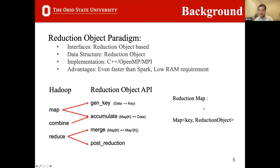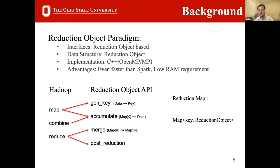To improve efficiency of local processing on edge devices, the authors drew inspiration from previous work on the reduction object paradigm, proposed as a highly efficient alternative to MapReduce. It contains four functions: key generation, object accumulation, object merging, and post-processing. For a given application, these four functions can be easily derived from Hadoop MapReduce, but they operate on a user-defined reduction object, which is an accumulator of values.